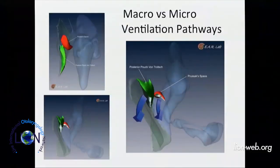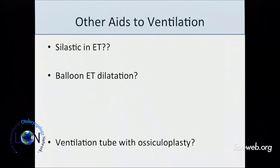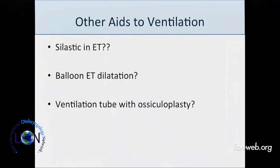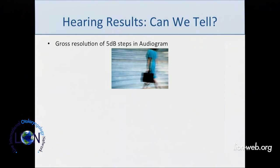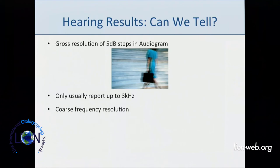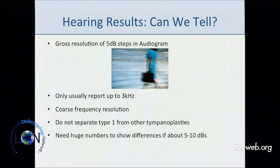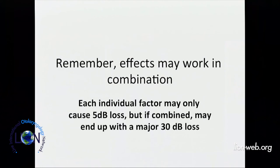Ventilation is key — we spend a lot on this. Clinically, we can't easily differentiate the factors because our resolution is too coarse: scarring varies greatly between cases, and we need temporal bone models for mechanistic insights. We usually only report hearing up to 3 kHz when we should report up to 8 kHz. There's coarse frequency resolution — only octave steps on the audiogram. We don't separate type 1 from other tympanoplasties in reporting. These factors work in combination, not one at a time.